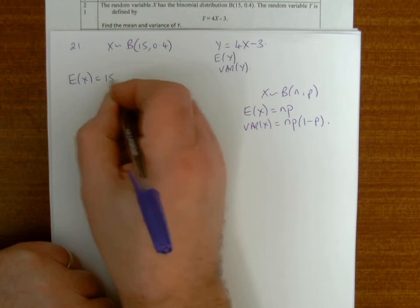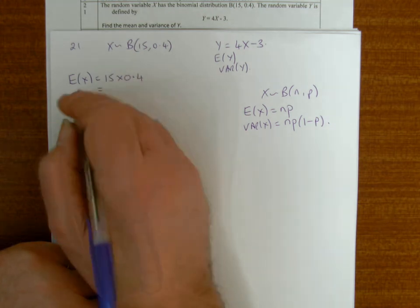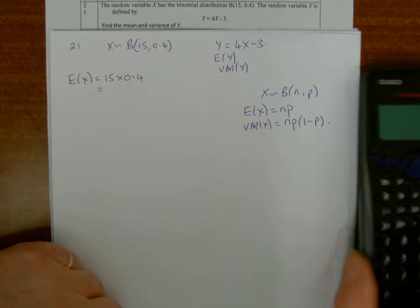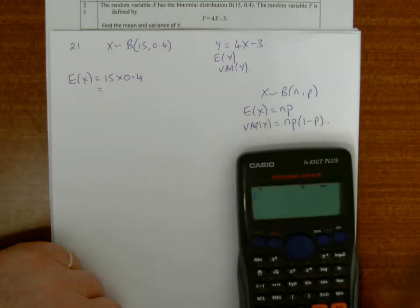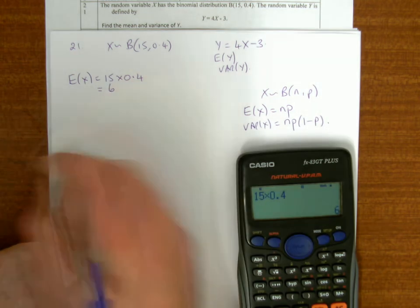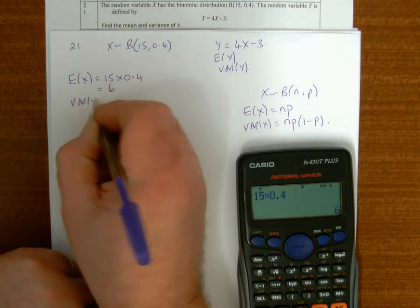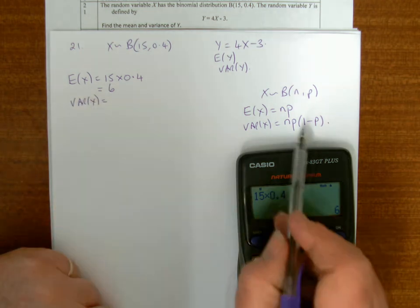is 15 times 0.4, and 15 times 0.4 is 6. And the variance of X is np(1-p), so that's 15 times 0.4 times 0.6.